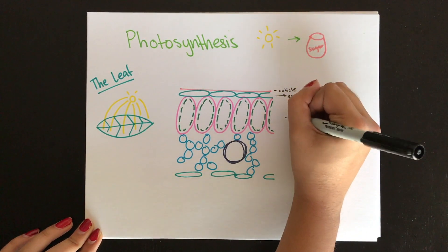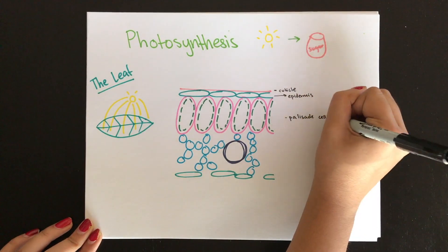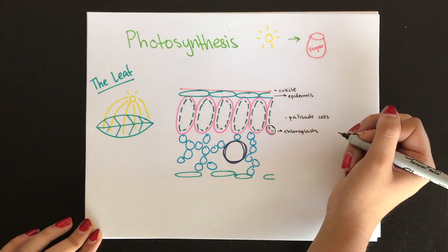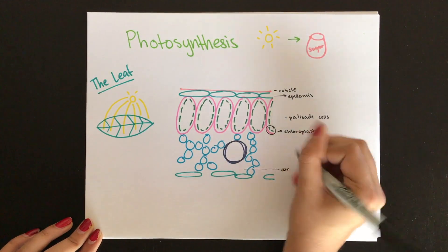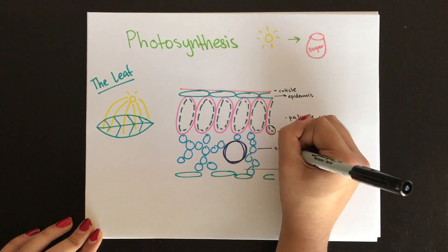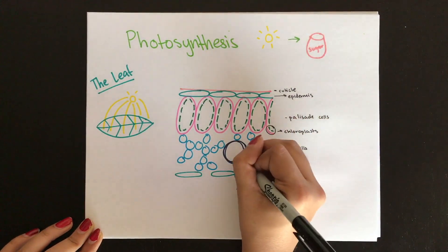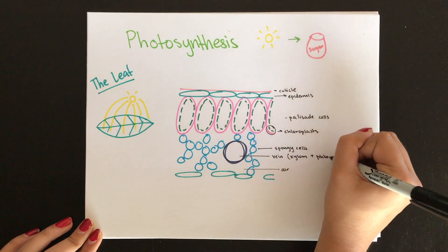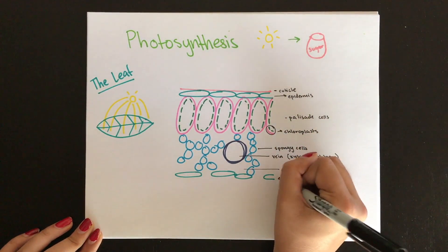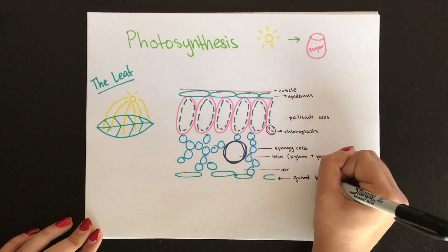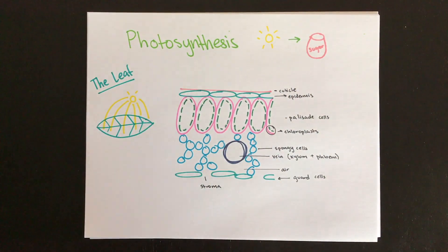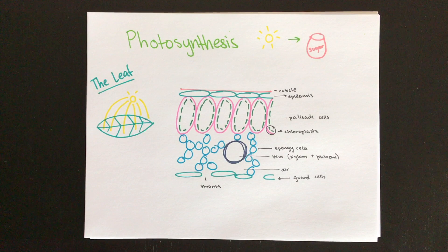The cuticle protects the leaf from attack and allows it to retain water. Next is the palisade layer, which is just under the surface of the leaf and this is where most of the photosynthesis takes place. The spongy cells also carry out photosynthesis but are more important for gas exchange. The stomata are present at the bottom surface of the leaf, allow for gas exchange, and are opened and closed by their guard cells.